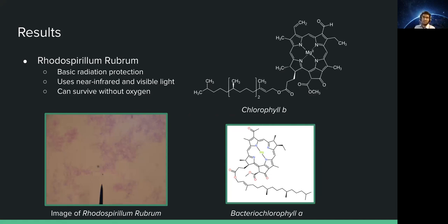We found that the bacteria Rhodospirillum rubrum could be used as a proxy to show that photosynthetic life could exist on Proxima b. Firstly, R. rubrum is a facultative anaerobe, meaning that it can survive both with and without oxygen.